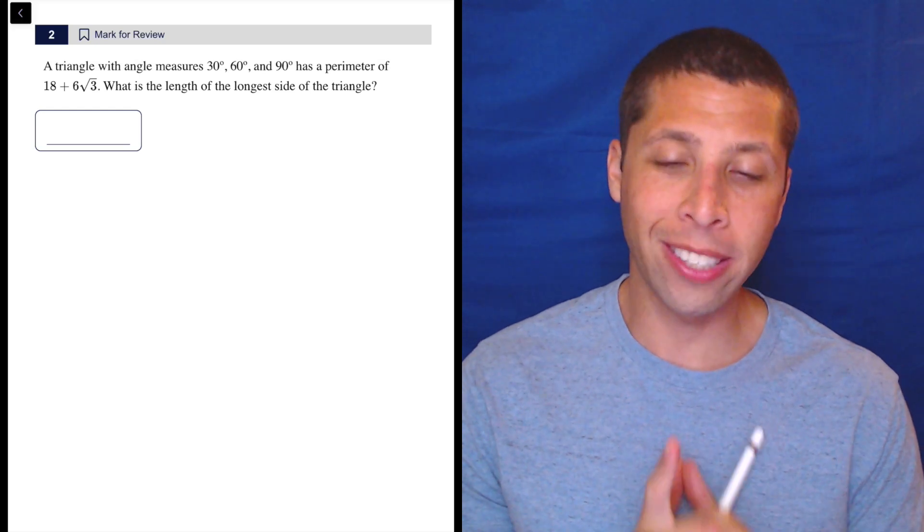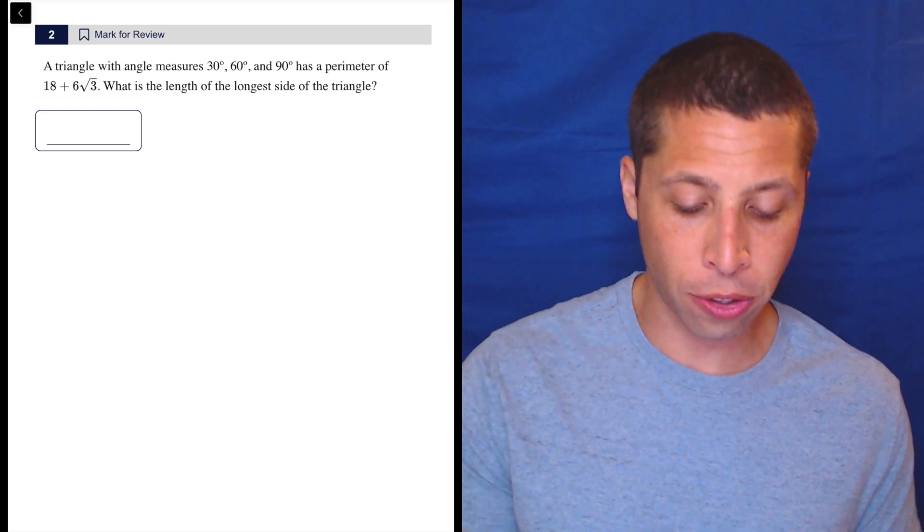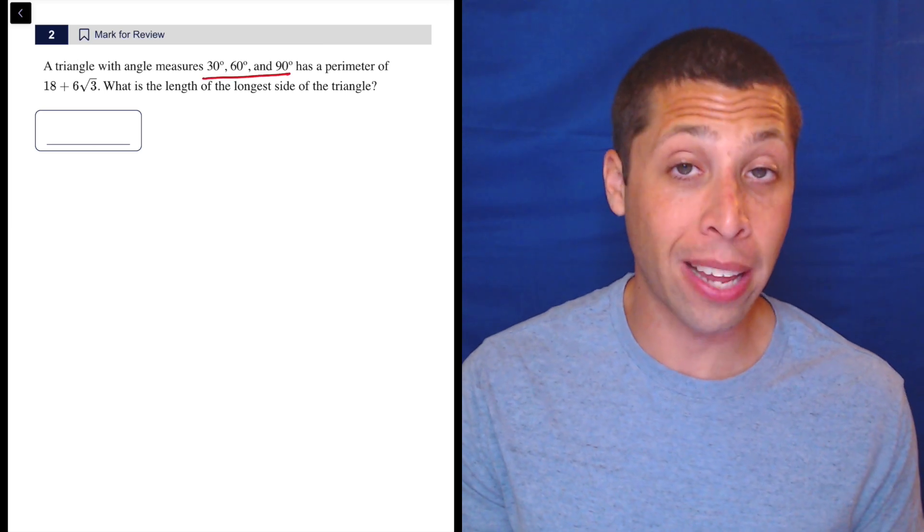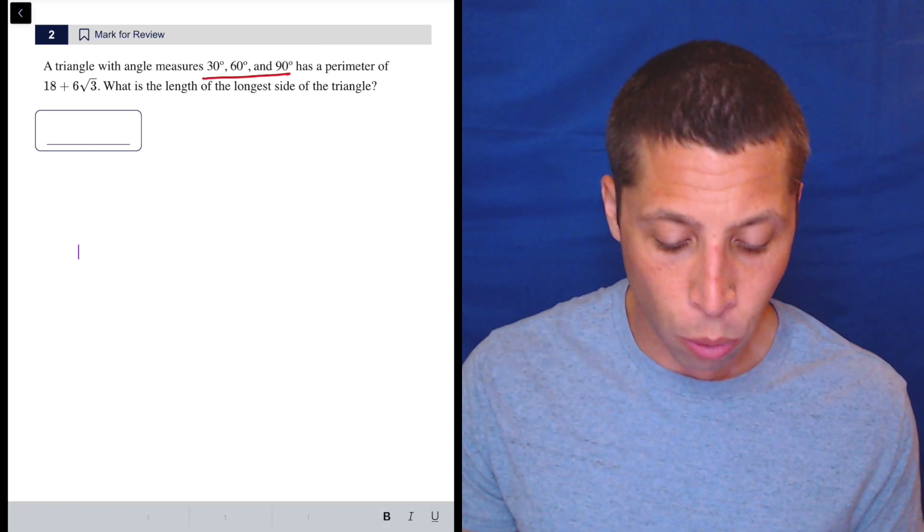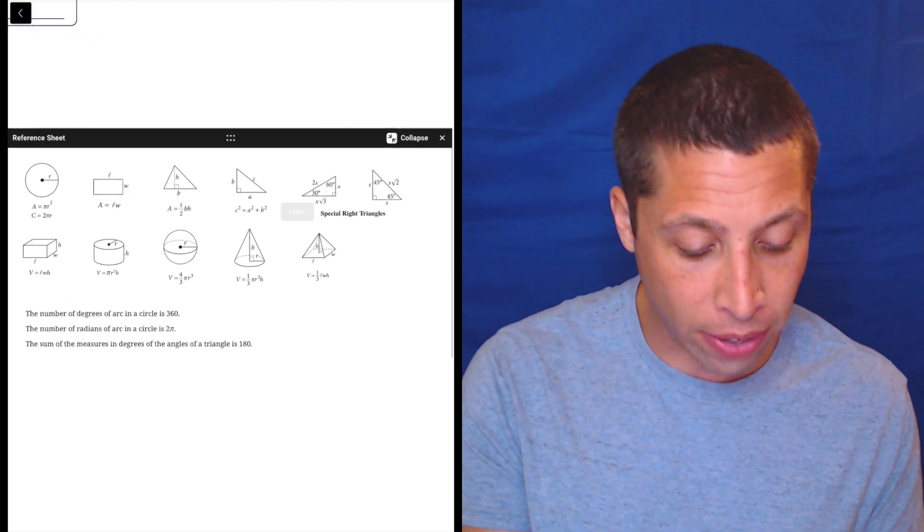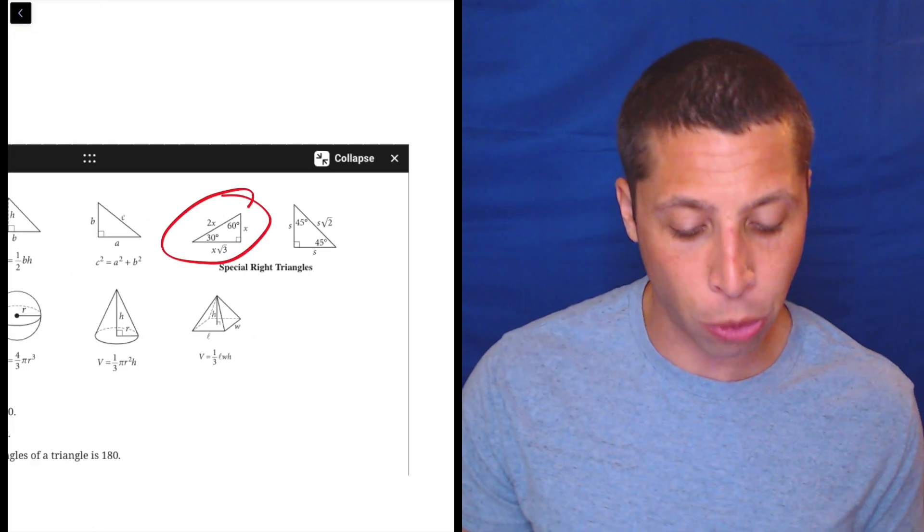All right, this question is telling you exactly what you need out of that reference chart. So hopefully you've trained yourself already to know that when they talk about a 30-60-90 triangle, we need to think about the 30-60-90 triangle that they give us in the special right triangles portion.